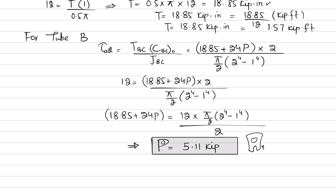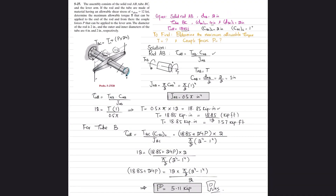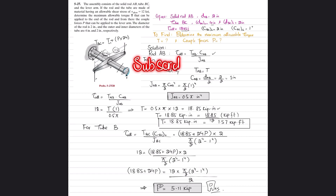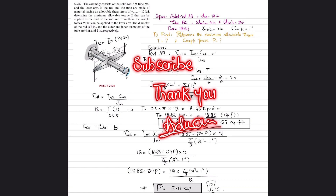So the couple forces P equal 5.11 kips, and the torque T equals 18.85 kip·inch. That was all about Problem 5-27. I hope you enjoyed this video and learned from it. If you're new to my channel, please subscribe and press the bell icon for notifications. If you have any questions, ask in the comment section. Thank you for watching.